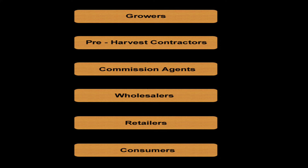This slide shows the hierarchy between consumers and growers. Starting from the growers, it goes to pre-harvest contractors, commission agents, wholesalers, retailers, and finally reaches the consumers.